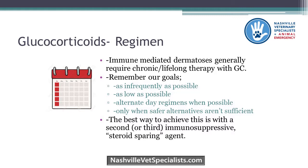Pemphigus patients are going to be on steroids the rest of their life. The goal is to get them to dexamethasone twice weekly at 0.1 mg/kg — as long as they're tolerating it from their monitoring. The best way to achieve goals with steroids is to add a second or third immunosuppressive agent.